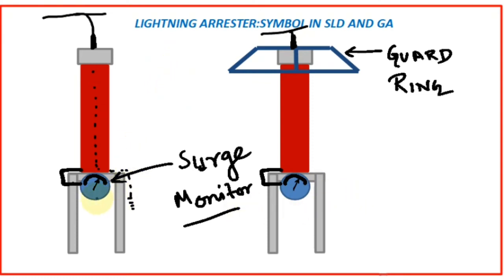This is the surge monitor or leakage current monitor, and this is the guard ring. For very high voltage lightning arrestors, such as 400 kV or above, there is also a corona ring, which is not shown in this drawing. Basically, we will be showing our lightning arrestor like this in the layout drawing.